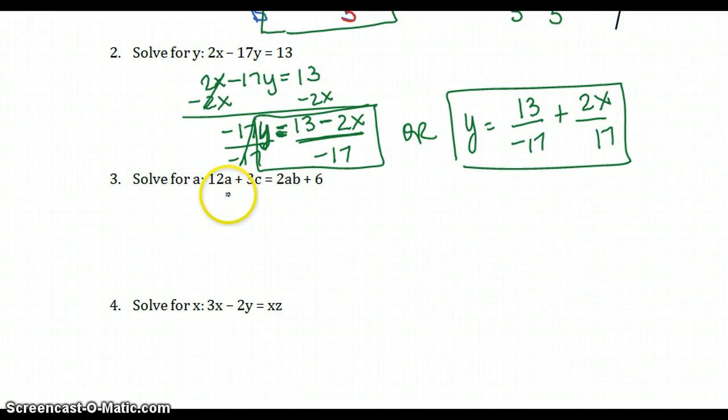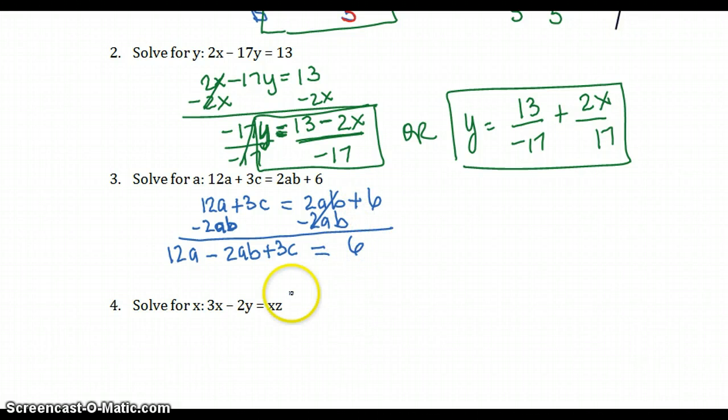Number three wants us to solve for A. We've got to get A isolated on one side or the other. I'm going to subtract 2AB because I need my A's all on one side. I have 12A minus 2AB plus 3C on the left, and I have 6 left on the right. Let's go ahead and take the 3C to the other side. So I have 12A minus 2AB equals 6 minus 3C.